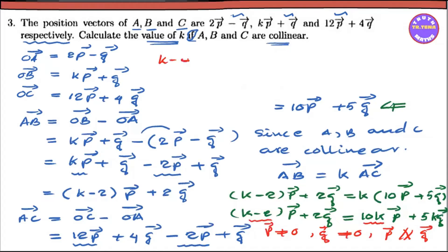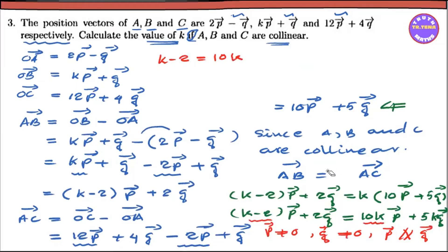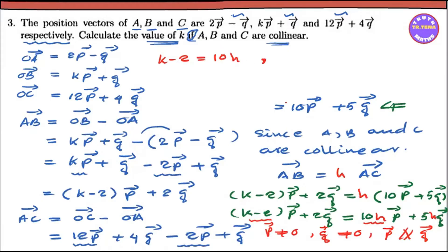K minus 2 equals 10k. Now the coefficient of q: 2 equals 5h. So h equals 2 over 5. Then k minus 2 equals 10 into h, which gives us k minus 2 equals the result. The QM coefficient is 5h.